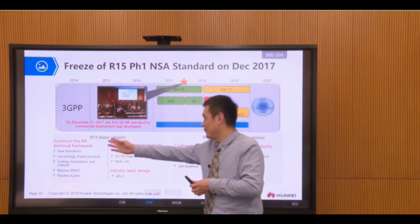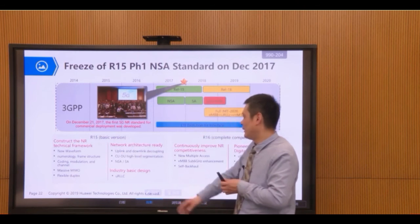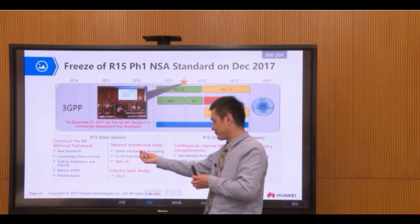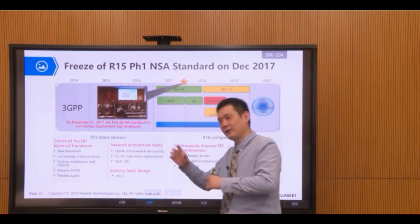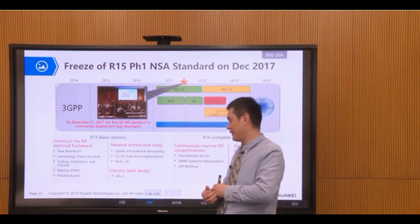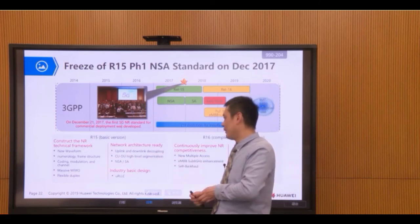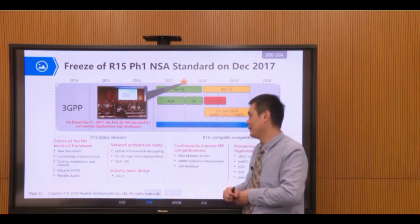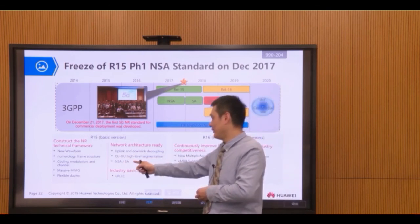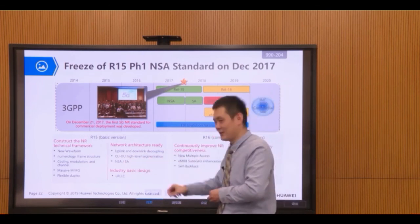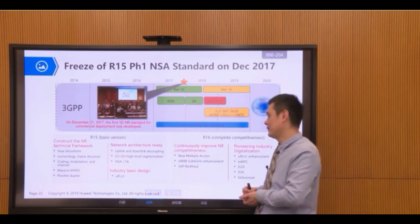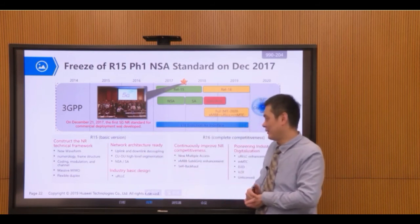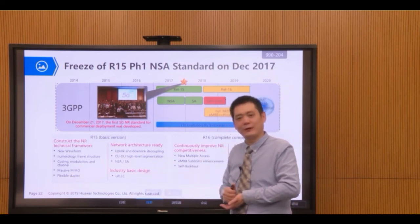That covers the radio part — New Radio. For the network architecture, Release 15 defined uplink/downlink decoupling, where uplink and downlink may use different frequency bands. It also defined CU-DU high-level segmentation, also called Cloud RAN, as well as NSA and SA architecture for the core network.